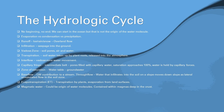Infiltration is when precipitation seeps into the ground. The vadose zone is the upper portion of the regolith below the surface, which contains soil pores, air, and water — in contrast to the water table or phreatic zone, where there's no air and it's completely saturated. Transpiration is soil water taken up by plant roots and released into the atmosphere. Interflow is water movement within the vadose zone that contains both air and water.